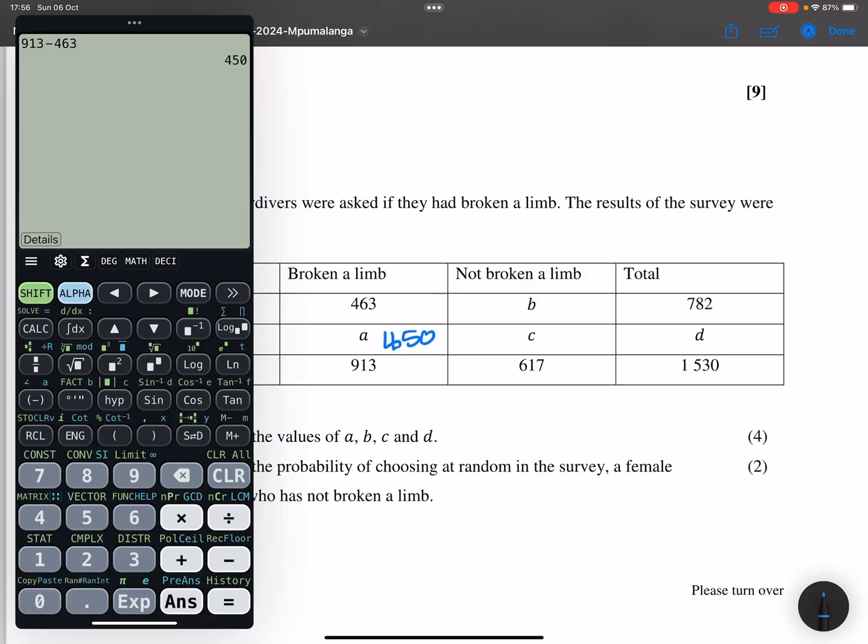And let's see. What about B? So B, we know if we add those two together, they should give us that total. So for B, we're going to say 782 minus the 463. So 782 minus 463. And that should give us 319.